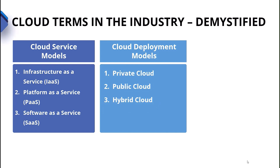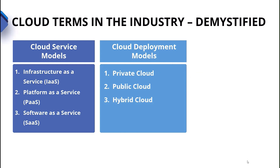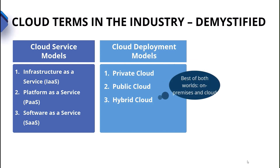What's the difference between all these three? Private cloud is about building those capabilities in your own data center — for example, building automation around things like VMware to provide virtual machines as a service, or building databases as a service through additional automation. In the public cloud, somebody else is doing a lot of those tasks for you. Hybrid cloud is the best of both worlds and, frankly, where a lot of enterprises are today.